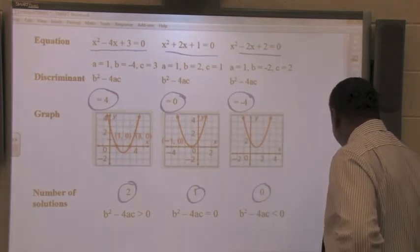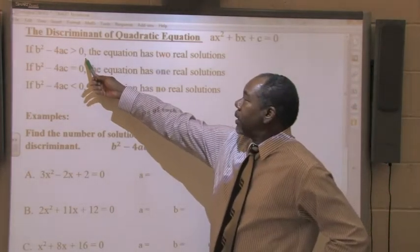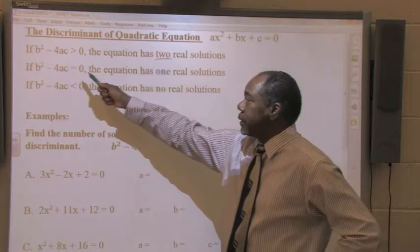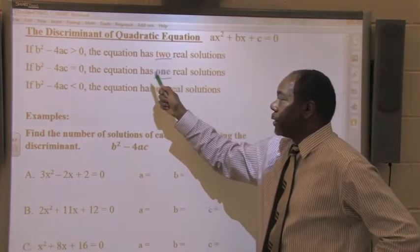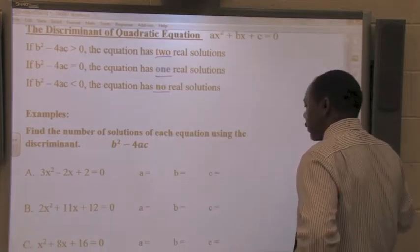Let's take a look at a couple of examples. So, again, greater than zero, two solutions. Equal to zero, one solution. Negative, no real solutions. Got a few examples, let's work through them.